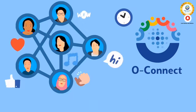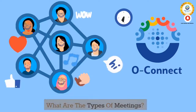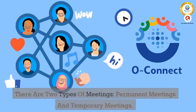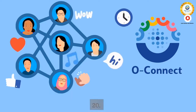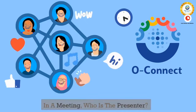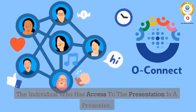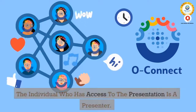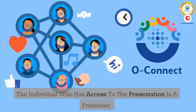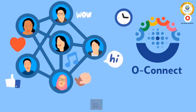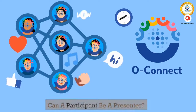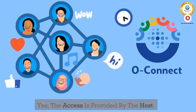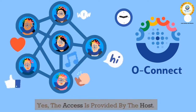19. What are the types of meetings? There are two types of meetings: permanent meetings and temporary meetings. 20. In a meeting, who is the presenter? The individual who has access to the presentation is a presenter. 21. Can a participant be a presenter? Yes, the access is provided by the host.